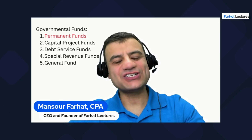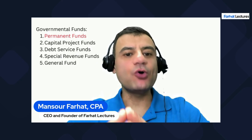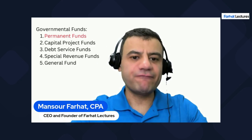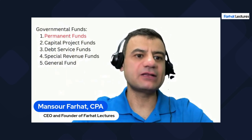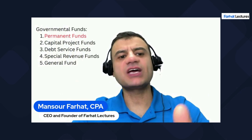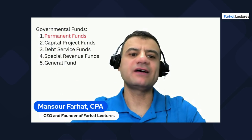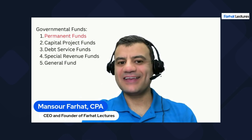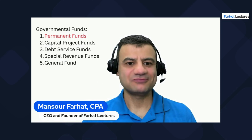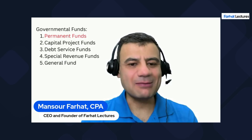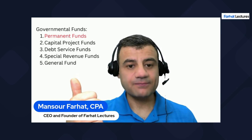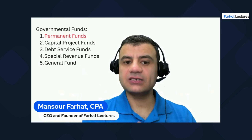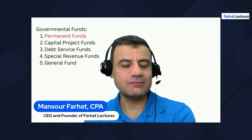Hello everyone, and welcome to this session in which we will discuss the permanent funds. The permanent fund is one of the five governmental funds: the capital project, debt service, special revenue funds, and the general fund. The permanent fund is a separate one. We're going to cover the purpose of it, the characteristics, the accounting, the journal entries, and the financial statements.